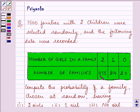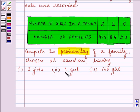475, 814, and 211. We need to compute the probability of a family chosen at random having 2 girls, 1 girl, and no girl.